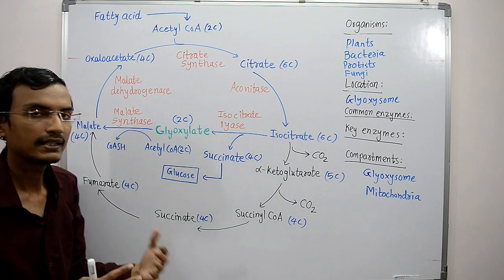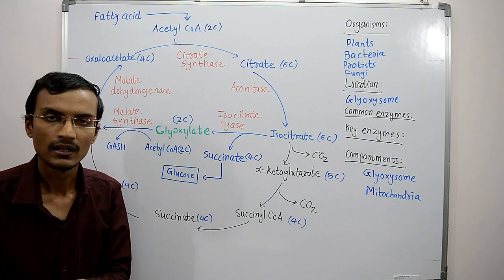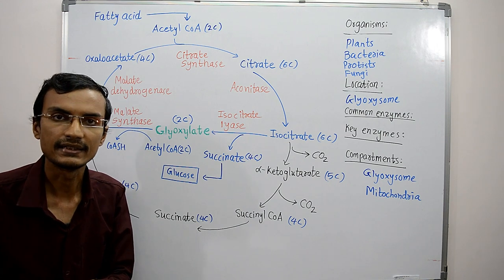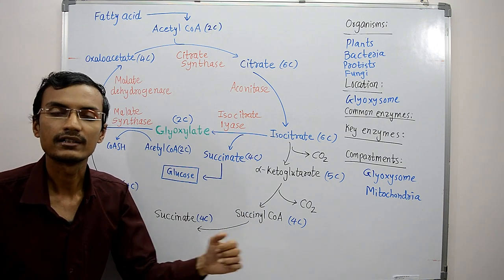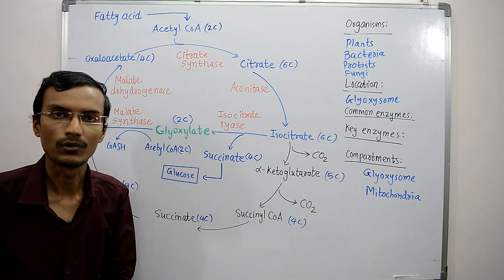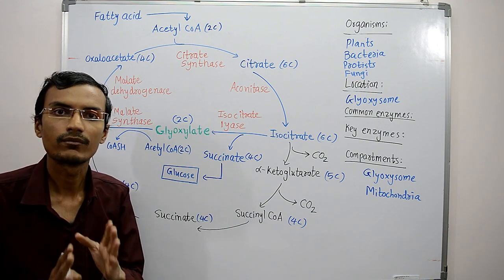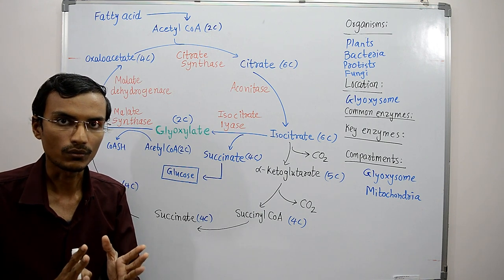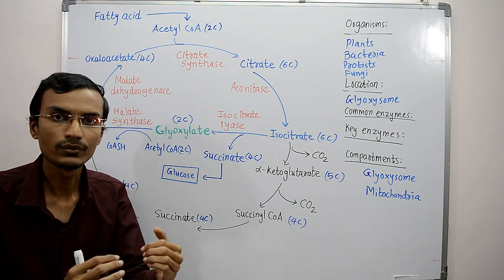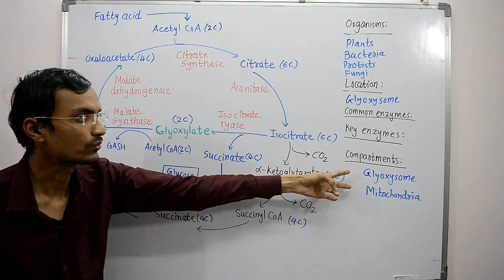During the germination of a seed, leaves are not yet produced, and the fat stored inside the seed is converted to carbohydrates without losing any carbon atoms. These carbohydrates can be used for various metabolic needs, such as synthesis of cellulose, which is made up of beta-D-glucose. So this carbohydrate comes from fatty acid.